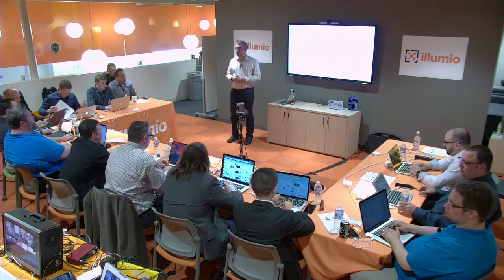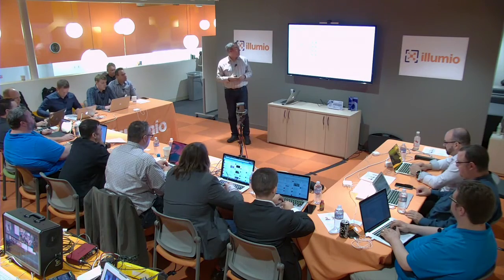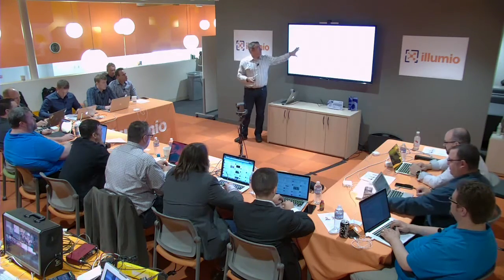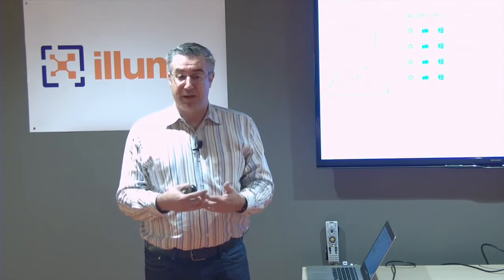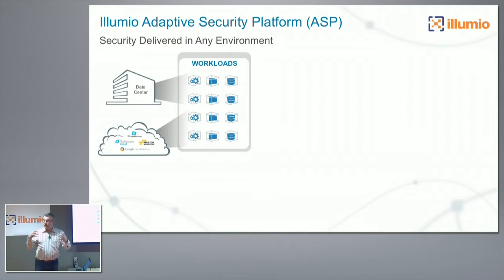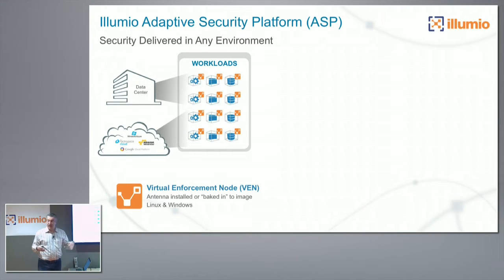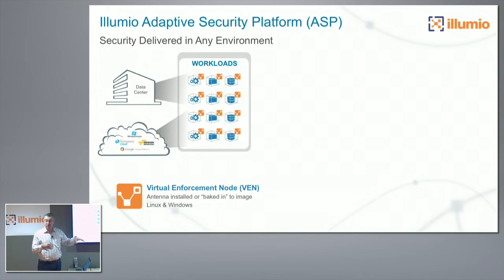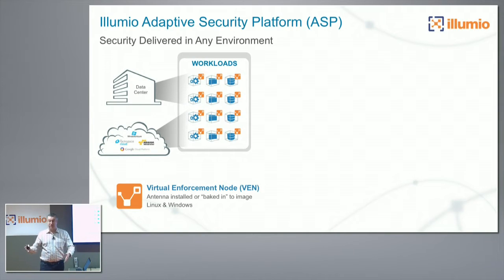Alan gave a good overview of what is happening. Let's start with: you have application workloads running in multiple environments — across bare metal servers or virtualized servers. The first component is the VEN, a software agent installed into those images if they're already running, or baked into the golden image, baked into AMIs, whatever philosophy you might have.